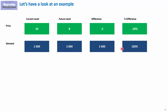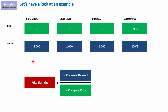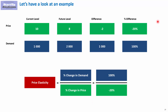If we present it as a percentage, this would mean that thanks to lowering the price by 20%, we increased the demand by 100%. Since we have the percentage change both in the price and in the demand, we're able to calculate the price elasticity. As a reminder, price elasticity equals the percentage change in demand divided by the percentage change in price. Since the price change is minus 20% and the increase in demand is 100%, the elasticity is minus 5.